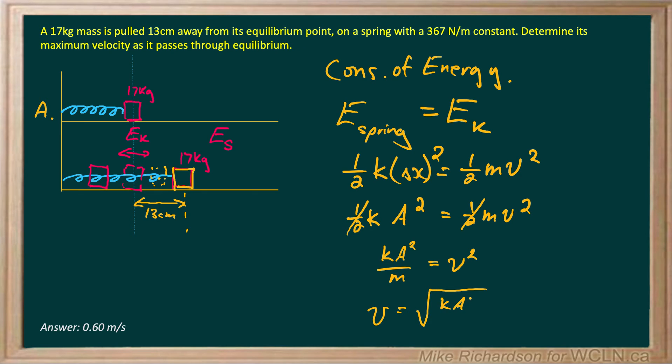Which is the square root of 367 times... now notice this is meters, so I've got to make sure that my amplitude is also in meters. So instead of writing 13 centimeters, I'm going to write it as 0.13 meters, but I have to square that.